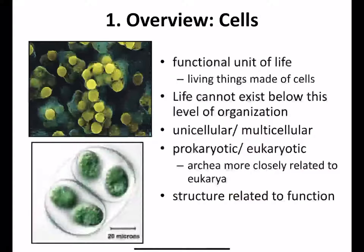Key things you want to remember for this chapter is essentially what is a cell. There are two characteristics about being prokaryotic and eukaryotic. Prokaryotes are much simpler, only reproducing by things like binary fission.